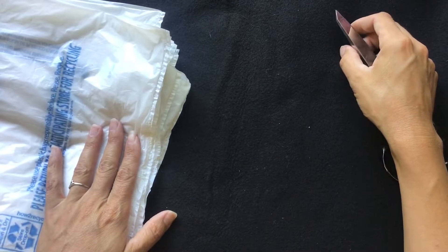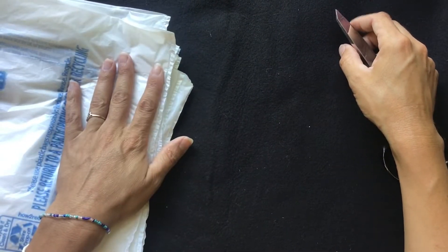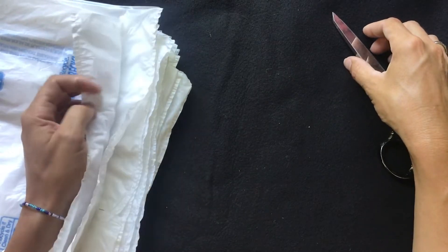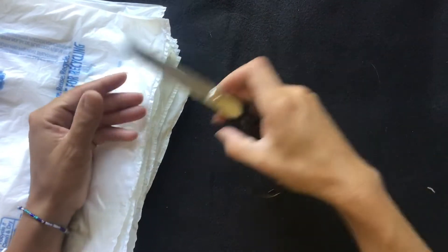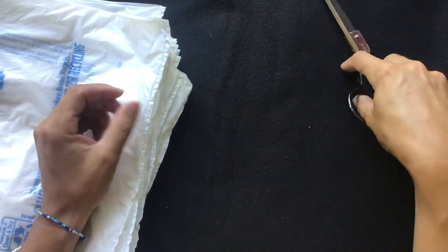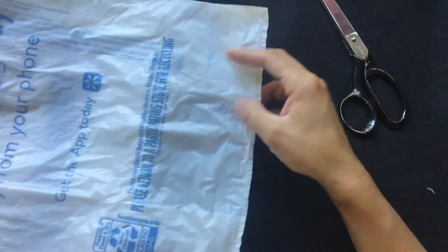So to do this, what we need is very simply just some old plastic bags. Make sure to go with the clean ones. Least amount of holes means the least amount of scrap that you're gonna have. And you also need a pair of scissors.